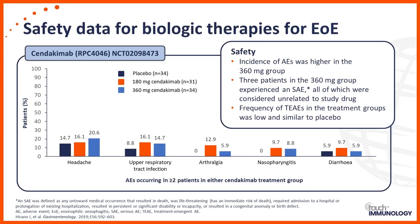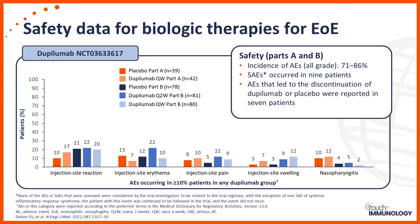Most of the trials have demonstrated pretty good safety profiles. There was no increased risk of infections despite biological therapy, although these would not be given to patients with active parasitic infections. For cendacumab, there was an increased risk of adverse events in the 360 milligram group, with the most common side effects being headaches, upper respiratory tract infections, arthralgia, nasopharyngitis, and in some cases diarrhoea. For dupilumab, the most common side effects were local injection site reactions and erythema, injection site pain, and nasopharyngitis. In the trial, one patient was hospitalised with an asthma exacerbation, but overall the safety profile has been demonstrated to be quite reasonable.